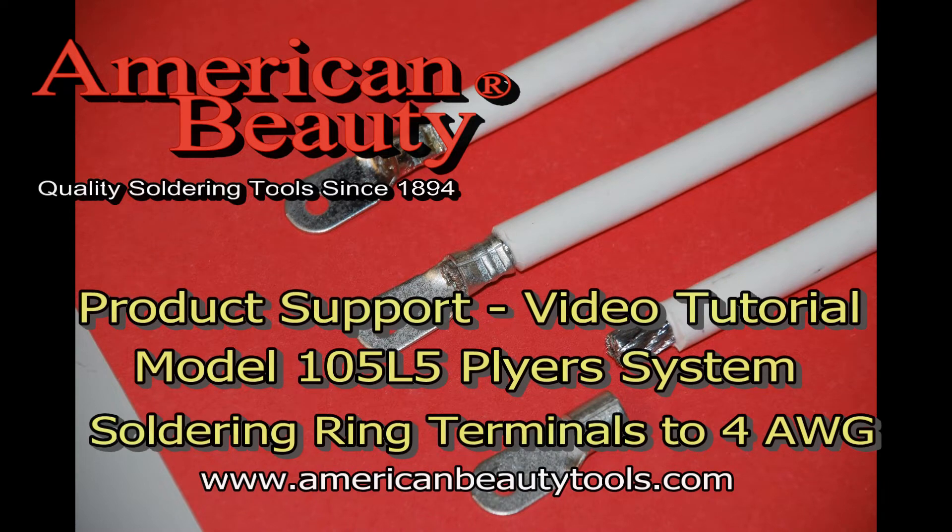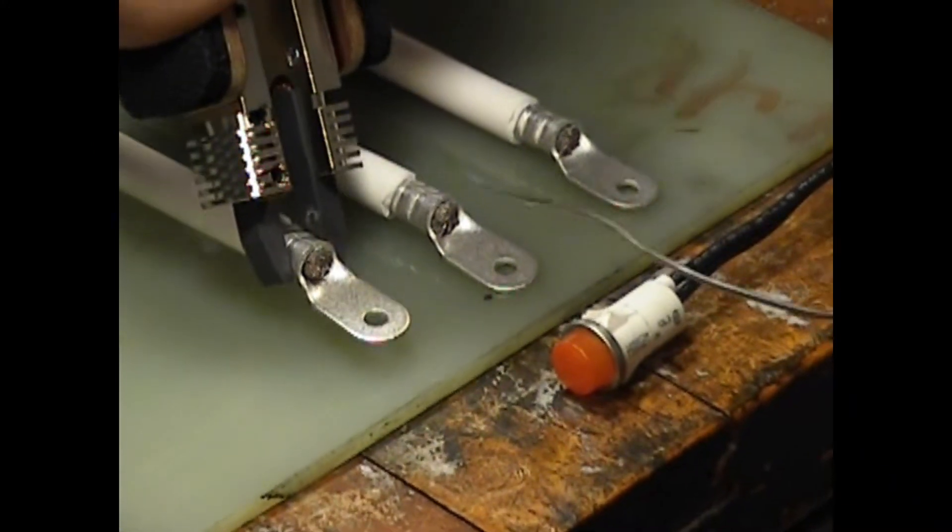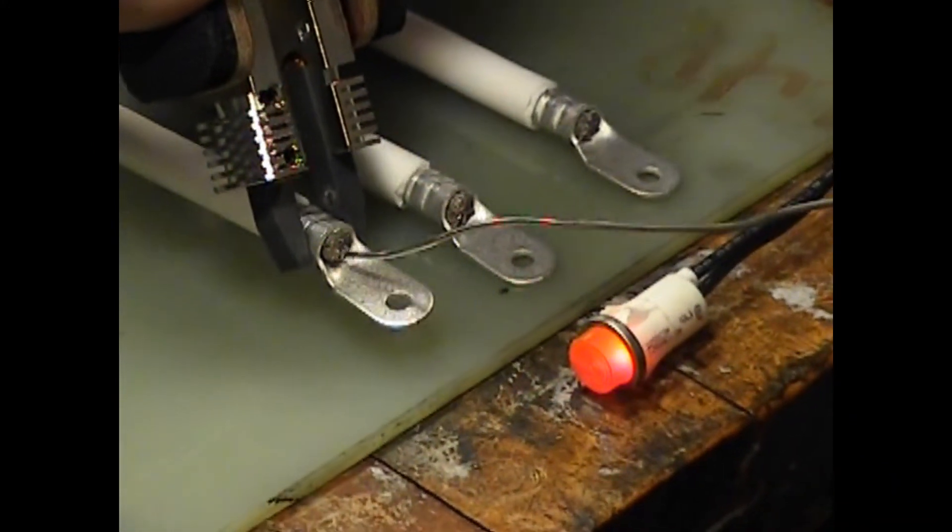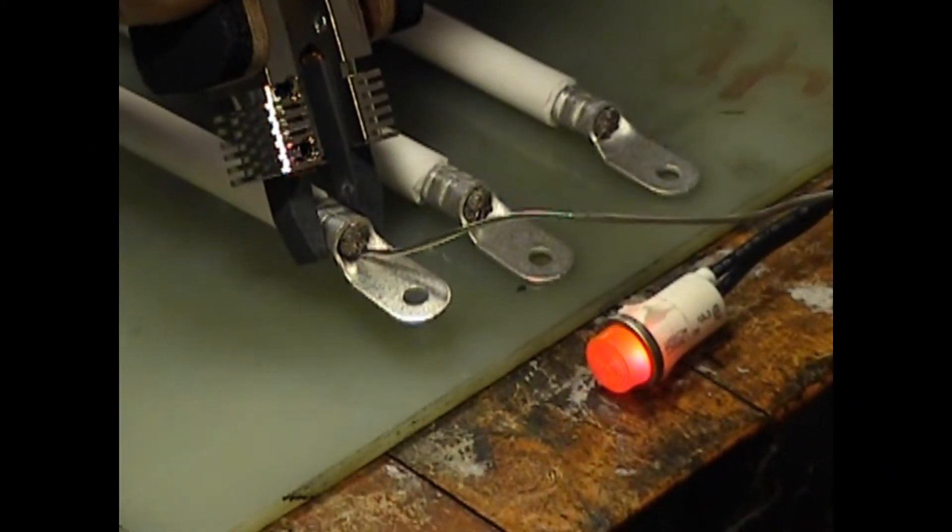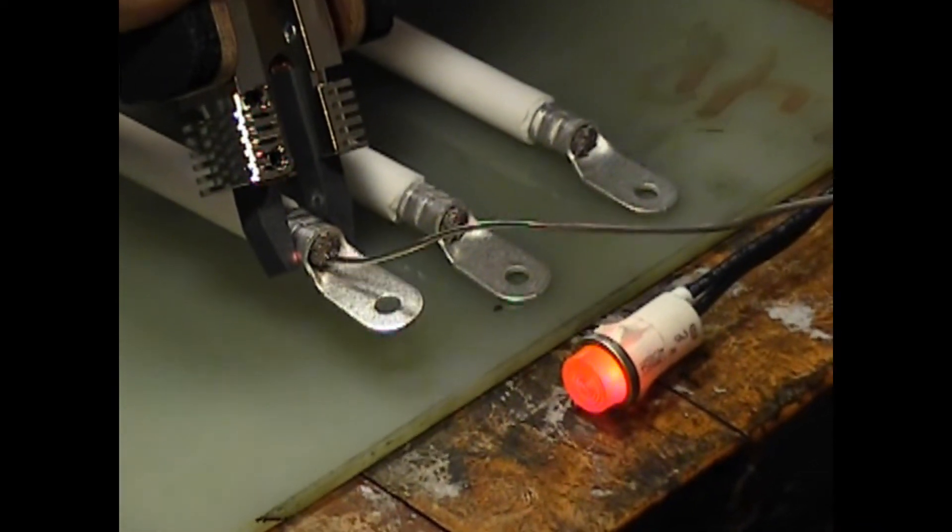Welcome to another American Beauty product support video tutorial. In this short video demonstration we will be resistance soldering uninsulated ring terminals that have been crimped onto a high stranded 4 gauge cable.